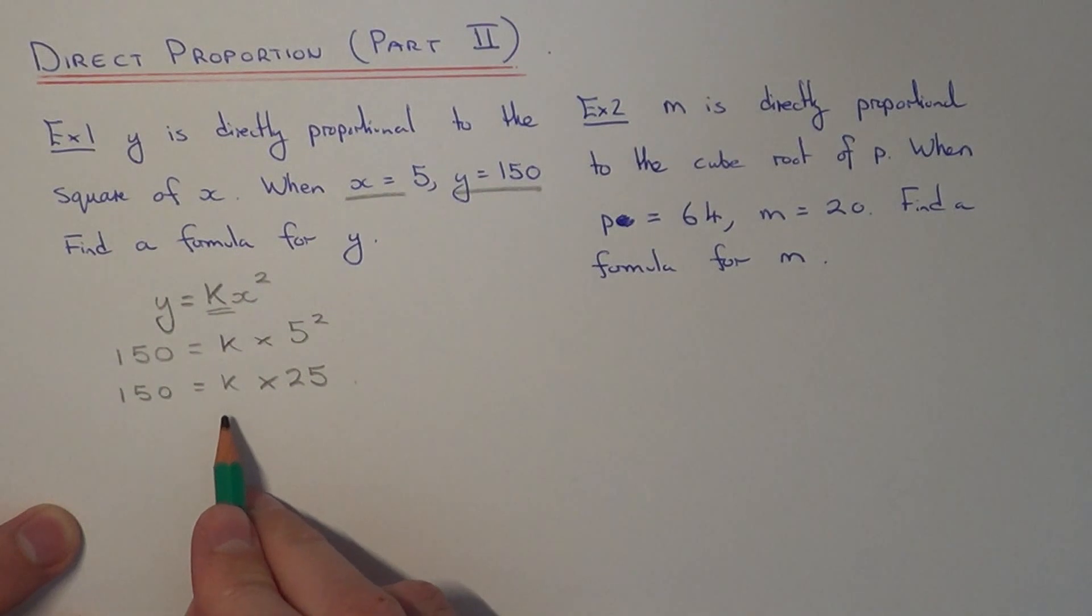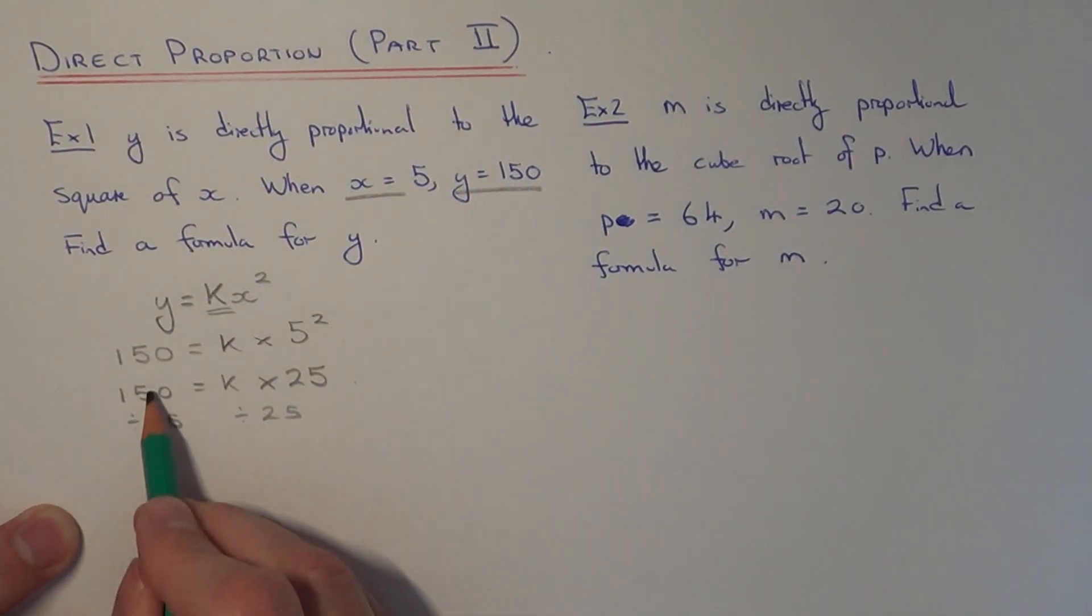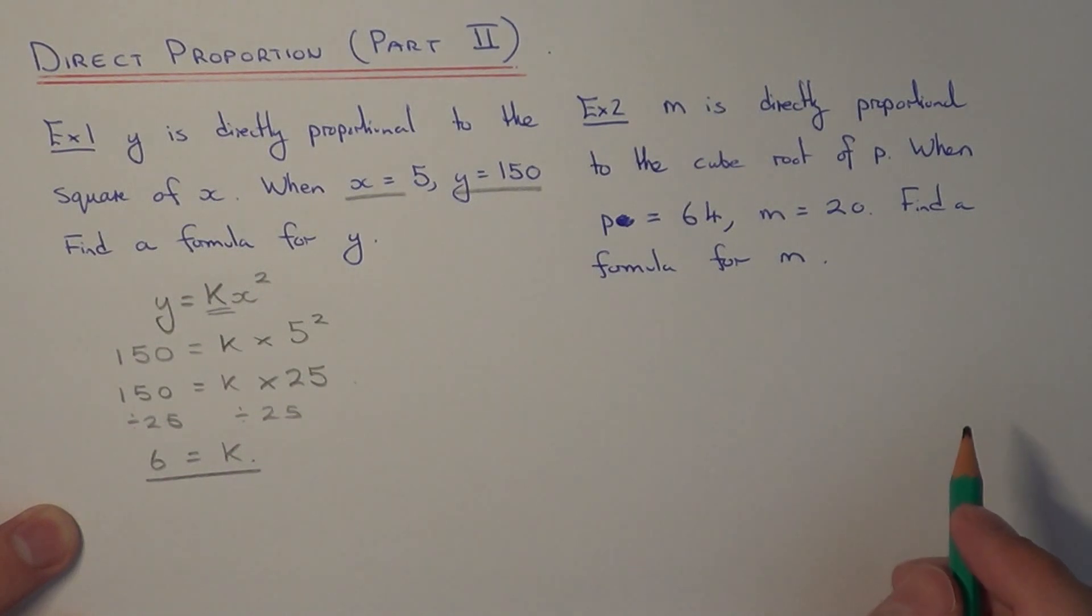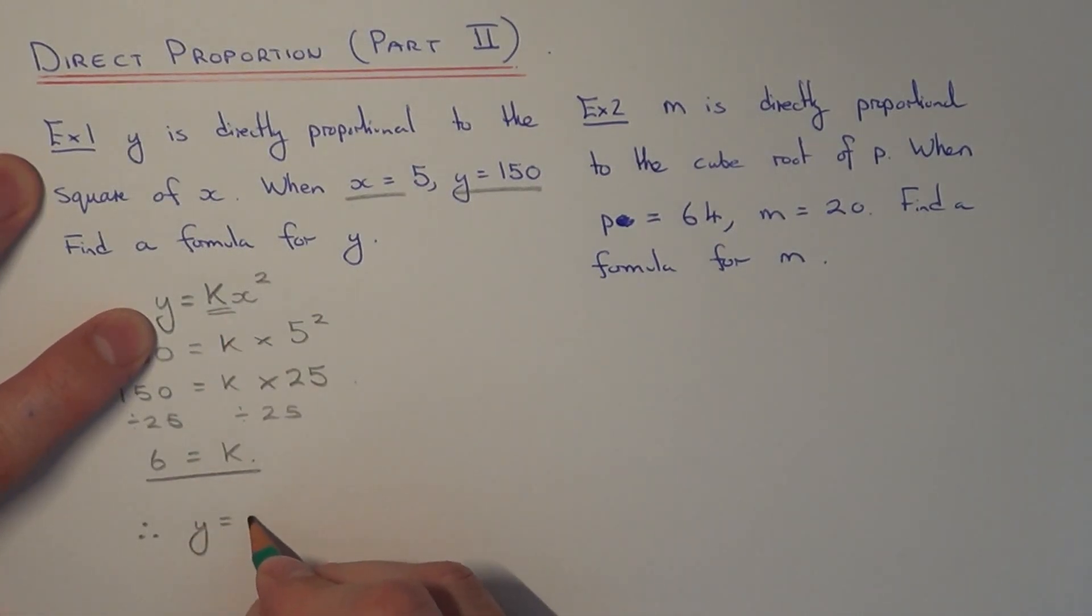We just need to figure out what k is by solving the equation. We can do this by doing the opposite of times 25, which is to divide both sides by 25. So 150 divided by 25 is 6, which gives me k. So my formula will be y equals 6x squared.